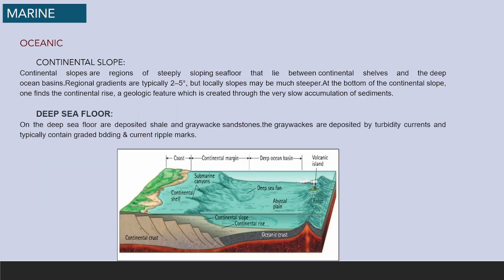The oceanic environment includes the continental slope. Continental slopes are regions of steeply sloping seafloor that lie between continental shelves and deep ocean basins. Regional gradients are typically 2 to 5 degrees, but local slopes may be much steeper. At the bottom of the continental slope one finds the continental rise, a geologic feature created through the very slow accumulation of sediments.